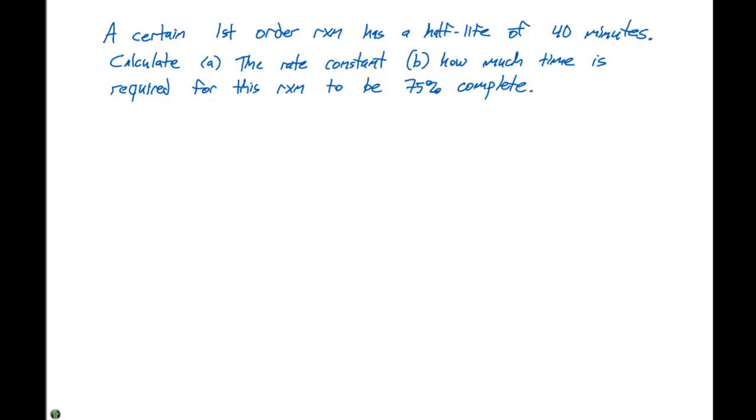A certain first order reaction has a half life of 40 minutes. Calculate A, the rate constant, and B, how much time is required for this reaction to be 75% complete.